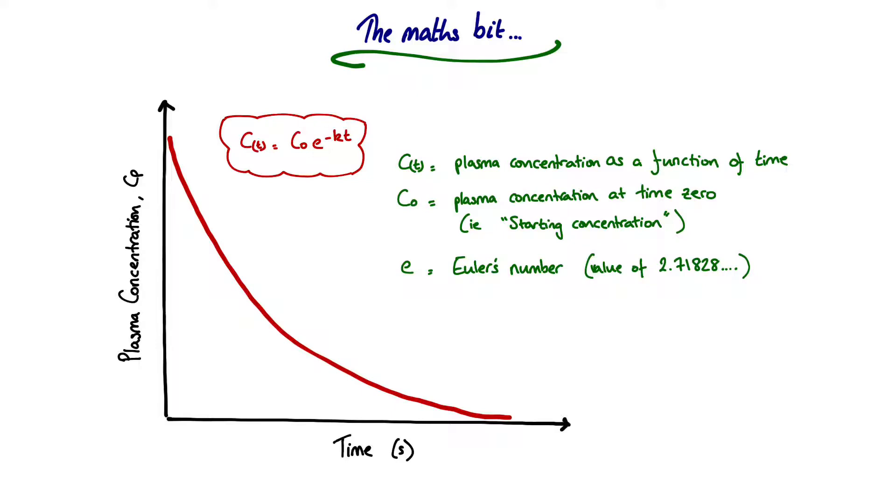E is Euler's number and has a value of 2.718. It's an irrational number, so these decimal points will just keep changing up to infinity. We'll talk about Euler's number and why it's used in a second.